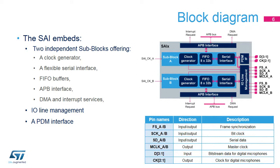Internal and external synchronization allows two sub-blocks to be synchronized, or two SAI interfaces to be synchronized. Each sub-block can handle up to four IOs. For each sub-block, FS is the frame synchronization, SCK is the bit clock, SD is the serial data, and MCLK is the master clock.